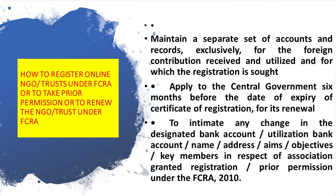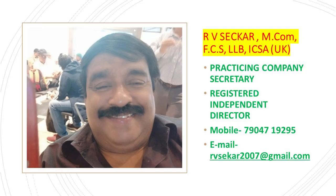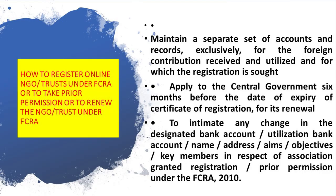In the case of receipt of funds from abroad, maintain a separate set of accounts and records exclusively for the foreign contribution received and utilized. The NGO has to maintain two separate account books: one for receipt of foreign contribution and one for utilization of the foreign contribution amount. Also, apply to the central government six months before the date of expiry of the certificate of registration. You should not wait until the last hour — apply for renewal well before six months prior to expiry.